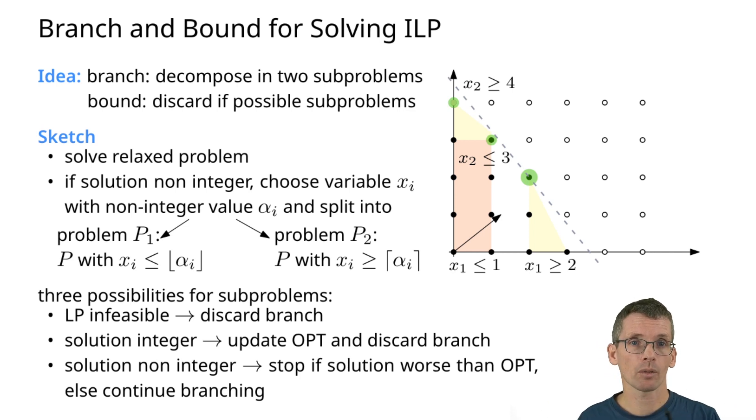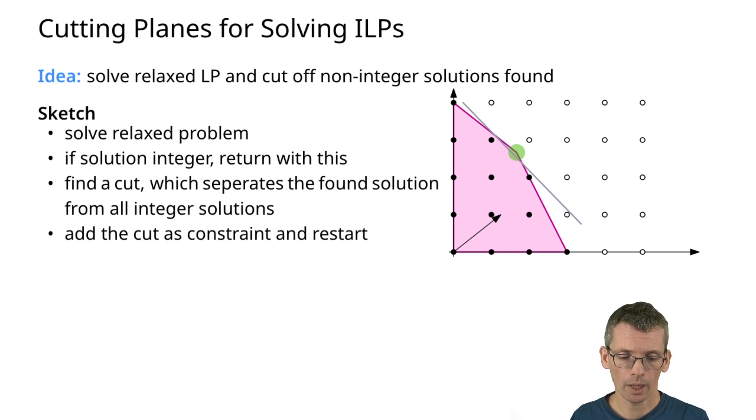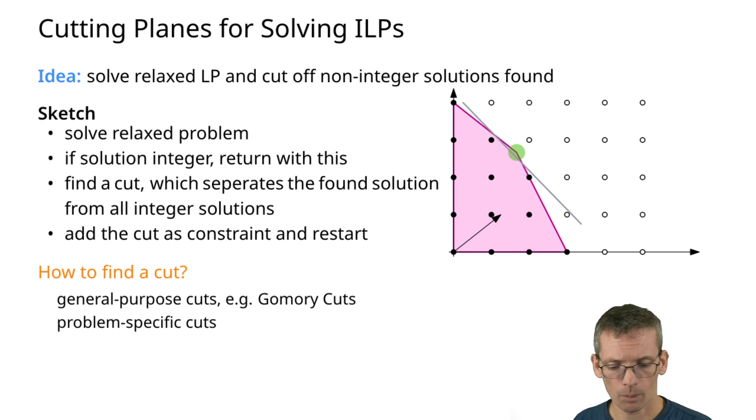That's branch and bound. Cutting planes is a very simple concept. If I have the LP relaxation and I have a non-integer solution, then I will be looking for a cutting plane—essentially yet another constraint which has the solution that was found on one side and all the integers that are feasible on the other side. So this is an example. Then I add that as a constraint and continue. There are cutting planes such that you can guarantee that eventually you will end up with an optimal solution in this way. There are two types of cuts: general-purpose cuts, and I'm not going to say more about that now, but less known ones are the Gomory cuts. Also, if you use an ILP solver it will do cuts like this to find an optimal solution for you. And there are also problem-specific cuts.